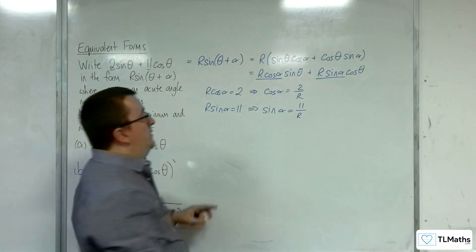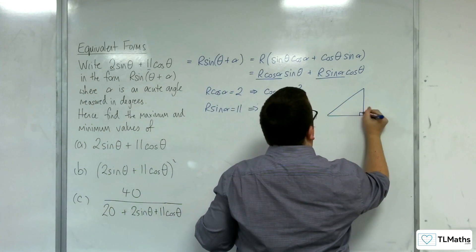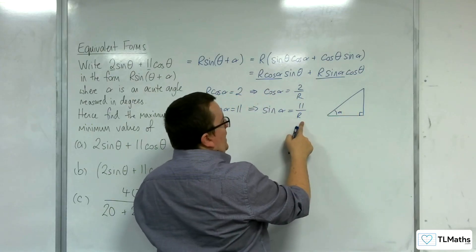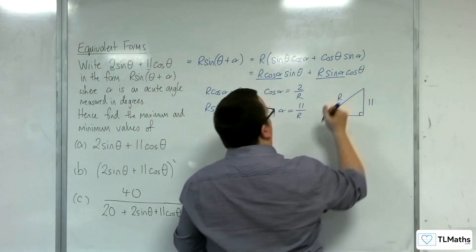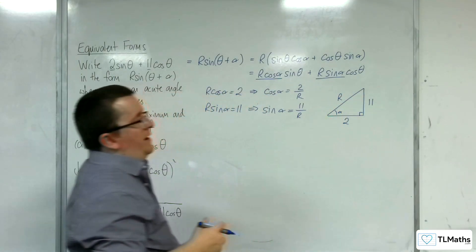Seeing as the angle is acute and in degrees, let's draw a little right-angled triangle. Here's alpha. If sine alpha is 11 over R, then that's the opposite over the hypotenuse. Cosine is adjacent over hypotenuse, so that's our right-angled triangle.